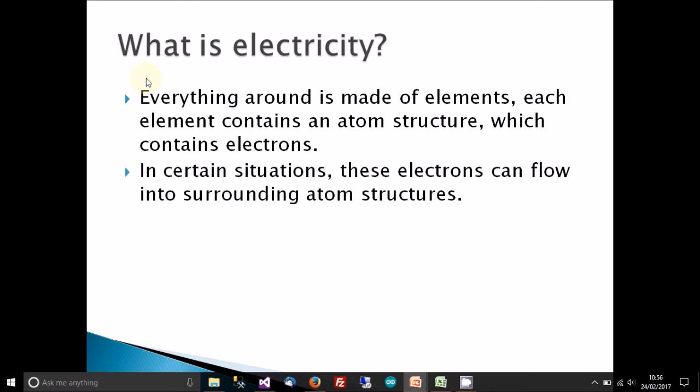So in certain situations, these electrons from atoms can flow into the next atom or the neighboring atoms, and therefore an element could lose an electron and another element could gain an electron, and this is how atoms get a charge, an electrical charge.